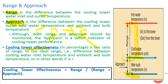Cooling tower effectiveness is the ratio of range to the ideal range — that is, the difference of cooling water inlet temperature and ambient wet bulb temperature. Simplified, it equals range divided by (range plus approach). If you want to know how effectively your cooling tower is working, you calculate it as range upon range plus approach. This is an important terminology that designers use to calculate the effectiveness of a cooling tower.